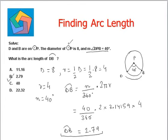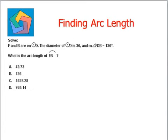Moving on to the next question. F and B are on a circle with center D. The diameter of the circle with center D is 36, and the measure of angle FDB equals 136 degrees.